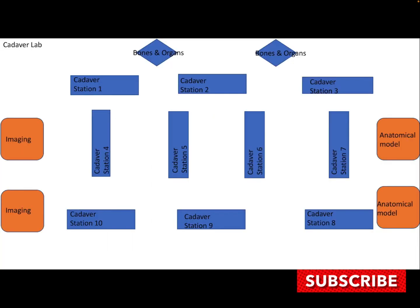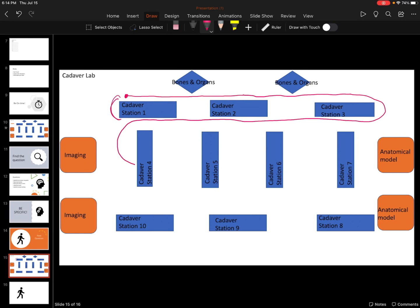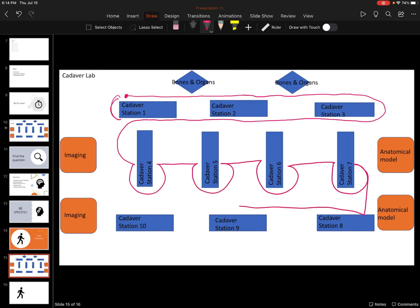This is a typical pattern of movement through the stations. In this example, we have 10 cadaver stations. You might start at cadaver station number 1, where there are 2 questions on each side. Then you move down to cadaver station 2, 3, and continue on that side. Then you go into cadaver station 4 on each side, then station 5, 6, 7, and so on — until you have finished through all the stations.